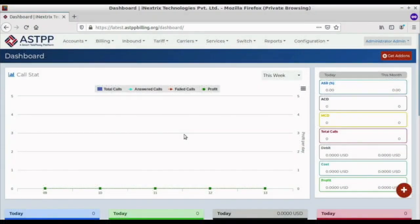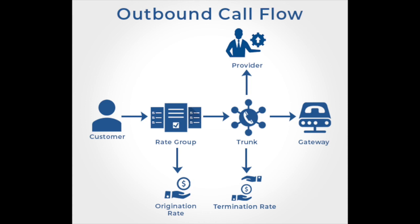We are going to learn how to perform an outbound call with ASTPP. In our ASTPP portal, we have a very simple way to make an outbound call. First, we will show you a simple diagram for the outbound call flow. In the diagram we can see the customer, provider, rate group, origination rates, gateway, trunk, and termination rates — these are the configurations we have to set up in ASTPP.